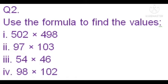Question number 2: Use the formula to find the value. In this question, two numbers are multiplied and we have to find the value of that multiplication using the formula. First, we have to write the numbers in the form of addition and subtraction so we can apply the formula (a + b)(a - b) = a² - b².